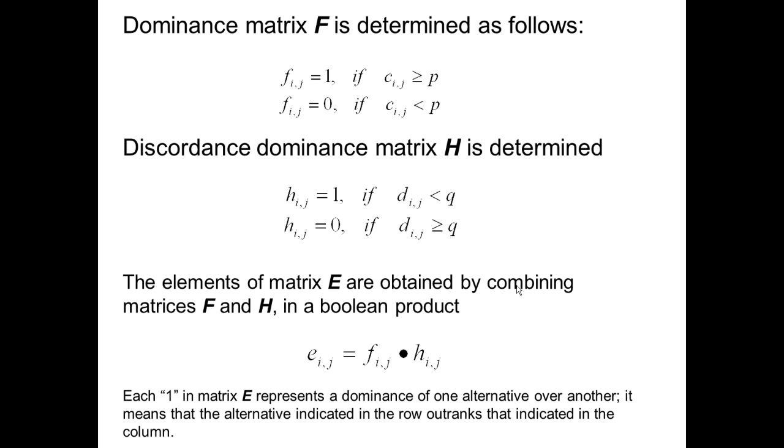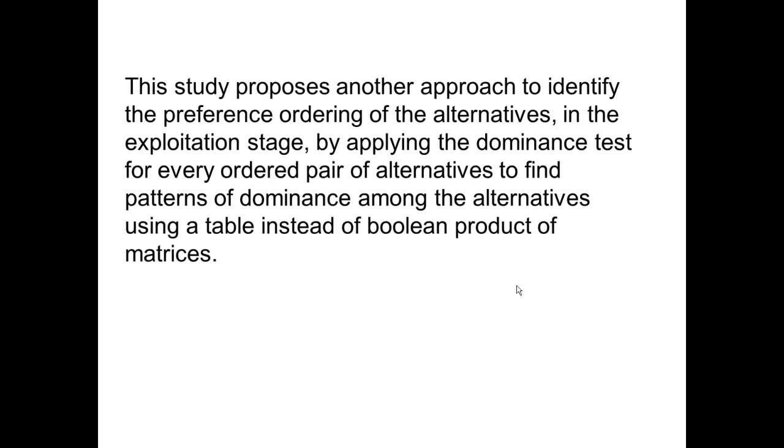This study proposes another approach to identify the preference ordering of the alternatives in the exploitation stage, by applying the dominance test for every ordered pair of alternatives to find patterns of dominance among the alternatives using tables instead of boolean products of matrices.